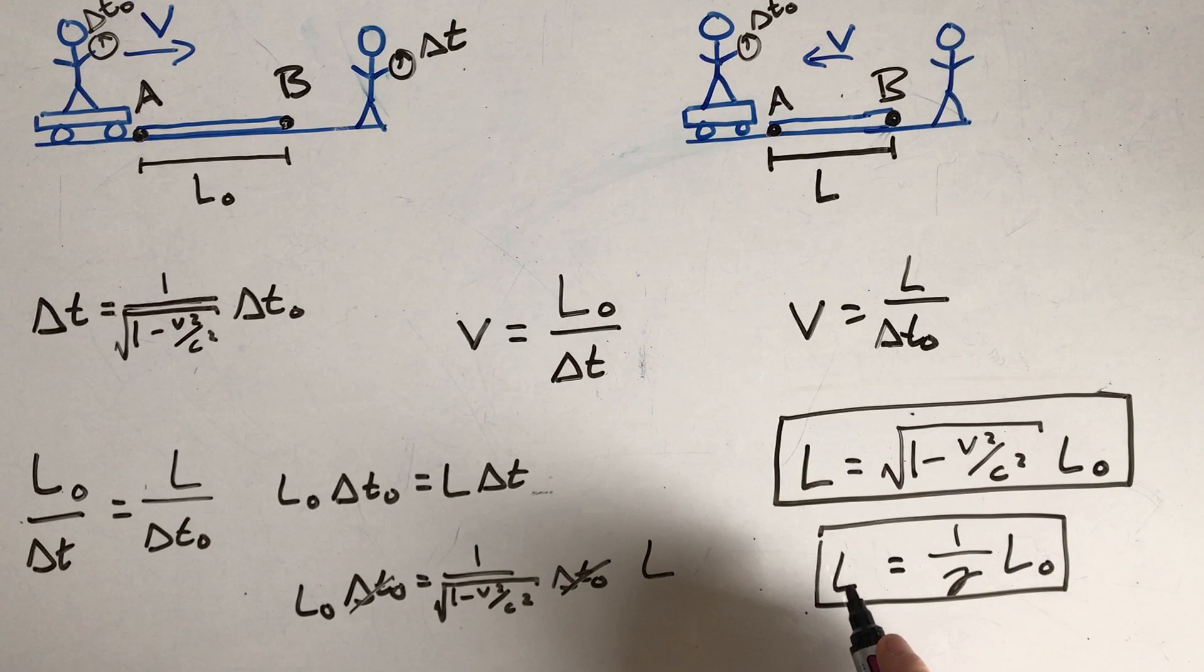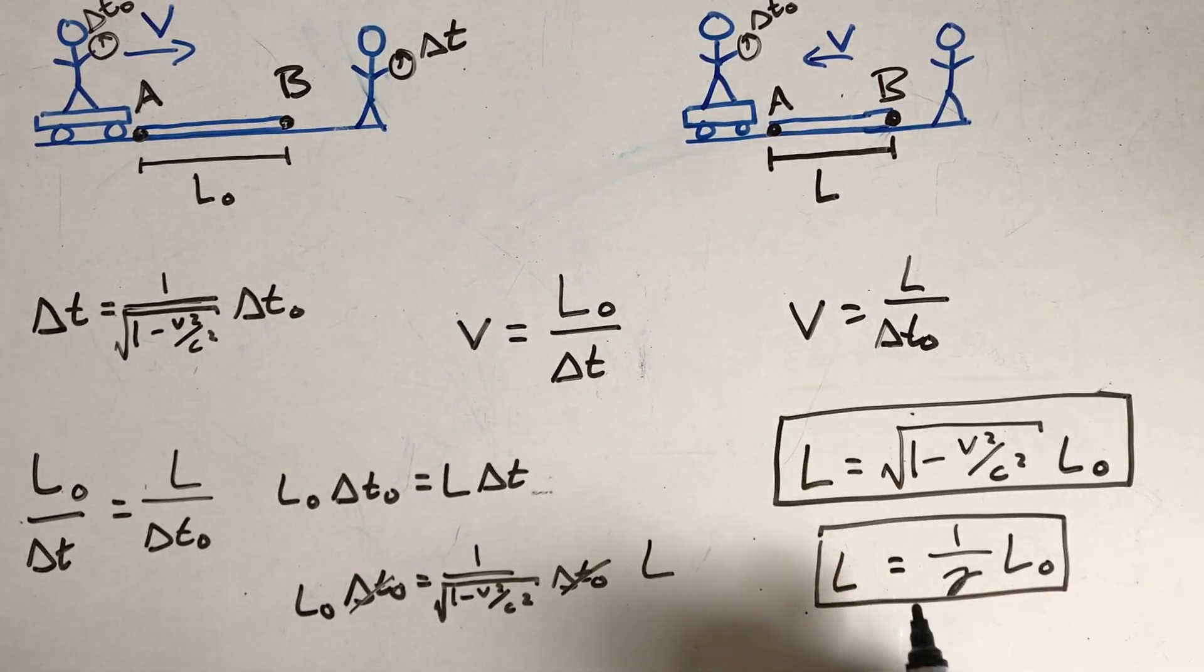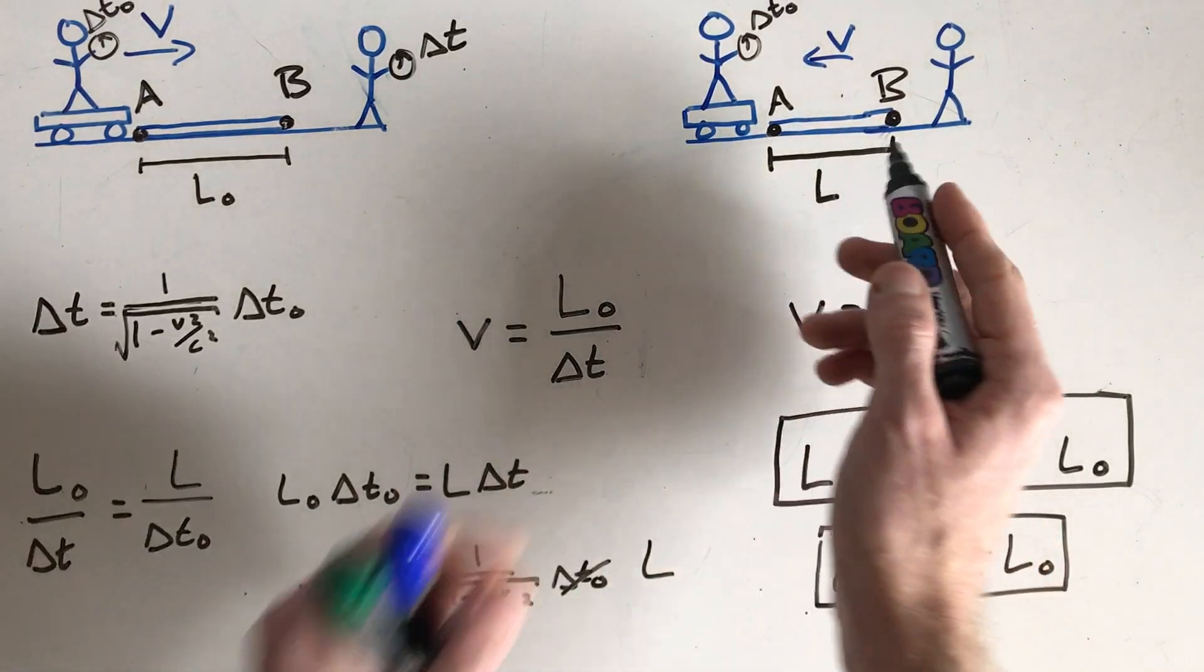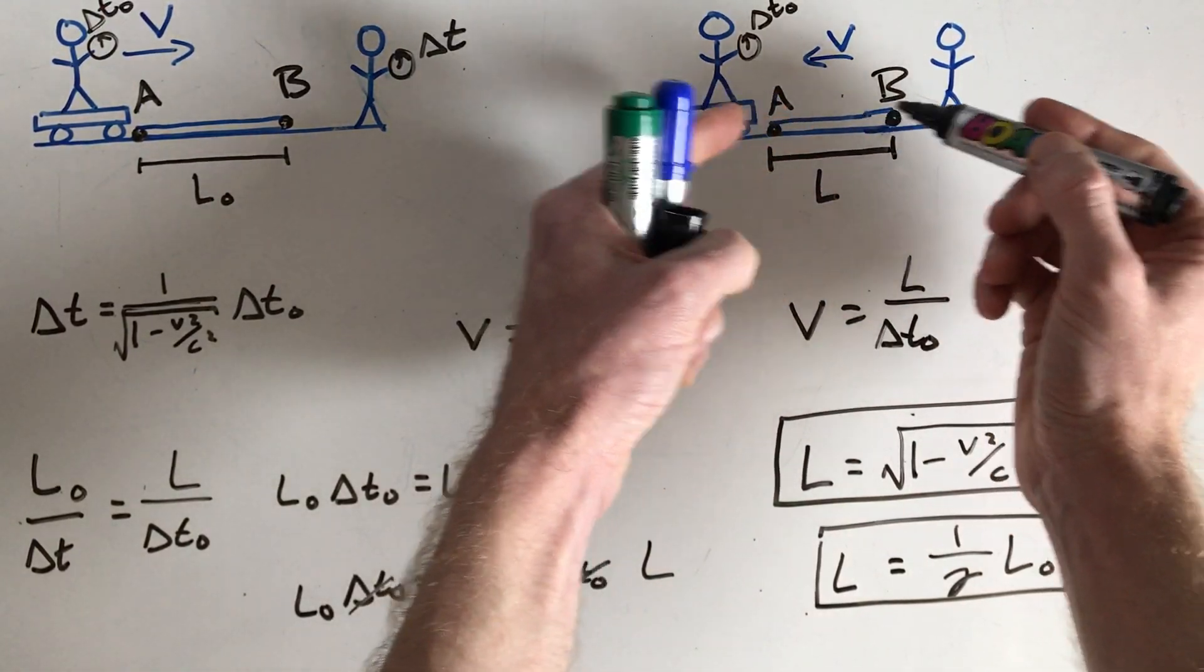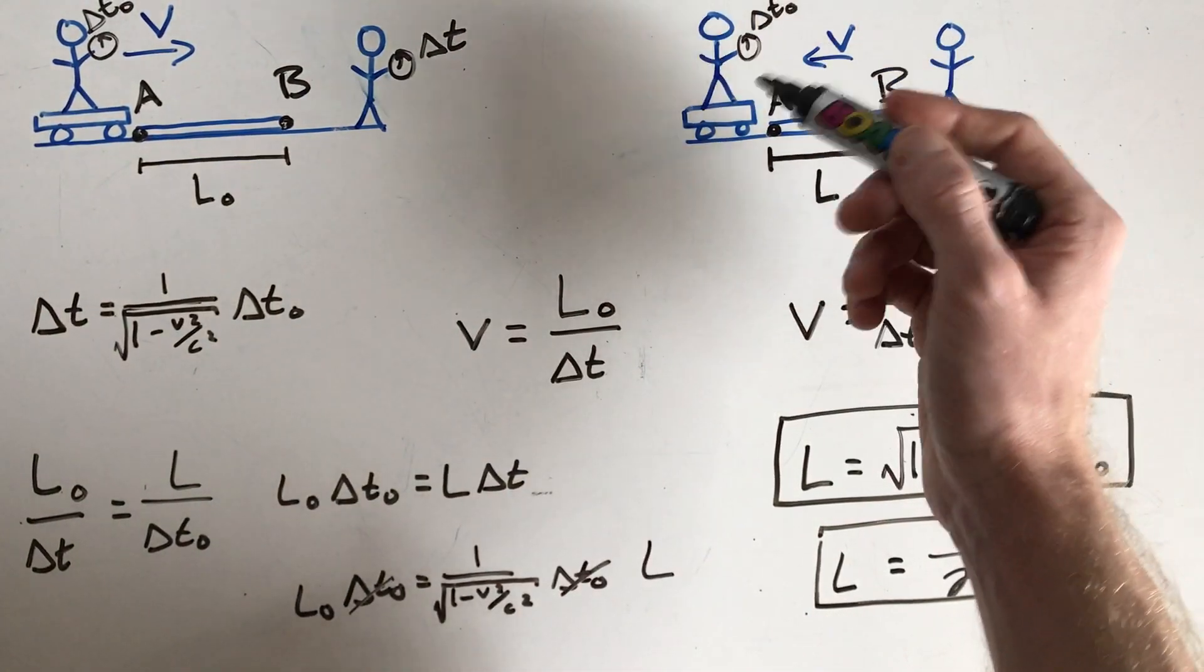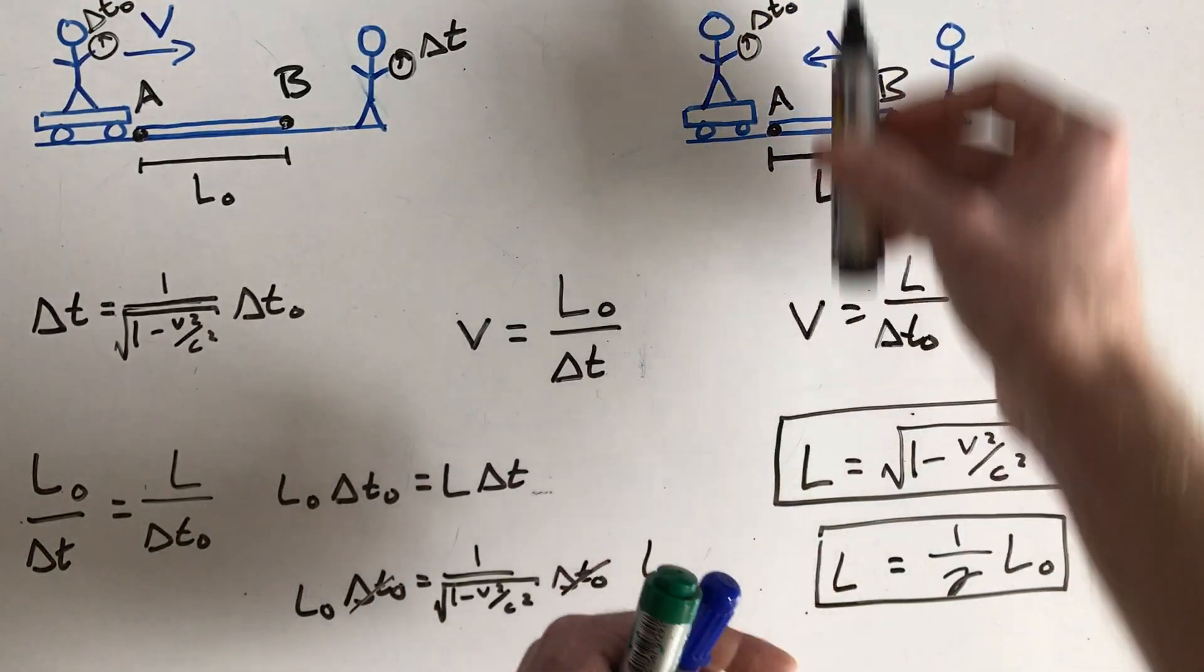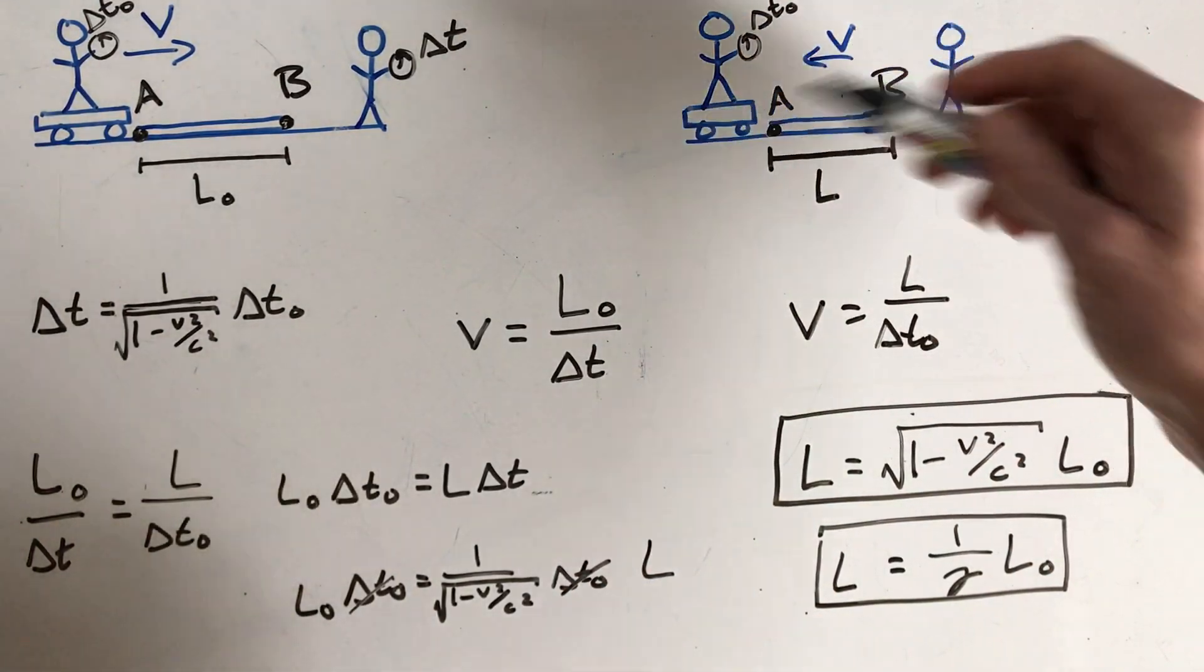So what this tells us is that moving objects are actually shorter than when the same object is observed to be at rest. So moving objects are going to contract in their direction of motion. So length contraction is only going to occur this way for the ruler. It's not going to squish this way because these observers aren't moving. The ruler's not moving in this direction, according to this observer. It's just moving towards them.